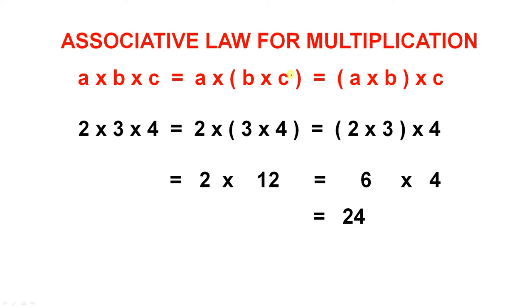The associative law for multiplication tells us that if you multiply 3 numbers together, you can combine b and c together and multiply those, and then multiply that answer by a, or you can combine a and b together, and you multiply the product of those two by c. So if you're multiplying 2 times 3 times 4, that will be the same as multiplying 3 times 4, that gives you 12, and then you multiply that answer by 2.